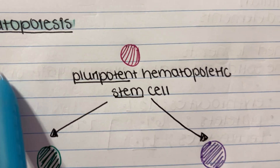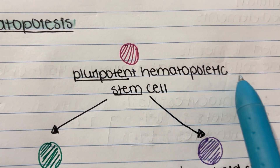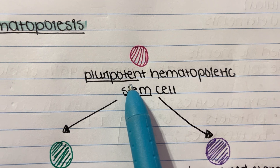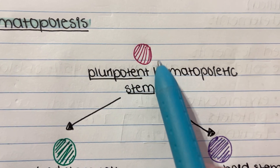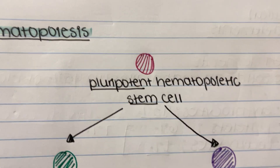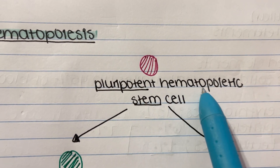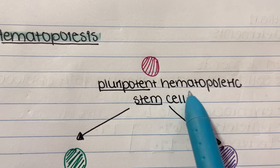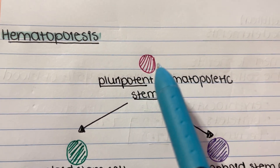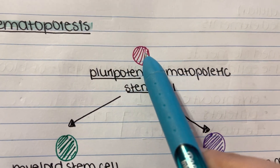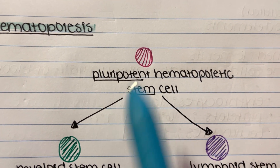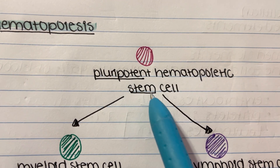The first thing you start with is a pluripotent hematopoietic stem cell. 'Pluripotent' means this is a cell from which other cells can come. 'Hematopoietic' refers to blood cell creation, so we know whatever is created from this cell must pertain to blood cells.